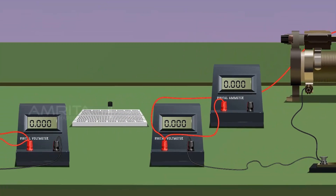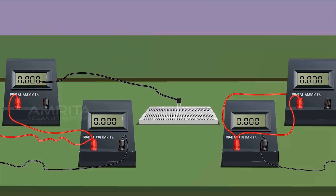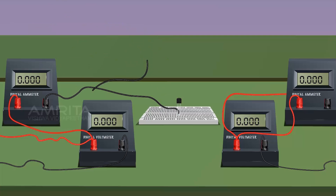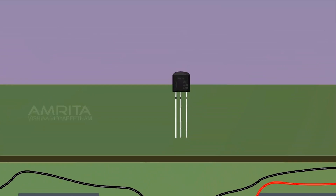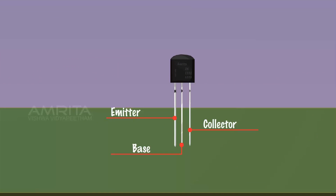Connect the negative terminal of the microammeter to the base B of the transistor. The emitter E of the transistor is connected to the negative terminal of the voltmeter V1. The collector of the transistor is connected to the negative terminal of the milliammeter. Transistor specification: Emitter, Collector, Base.